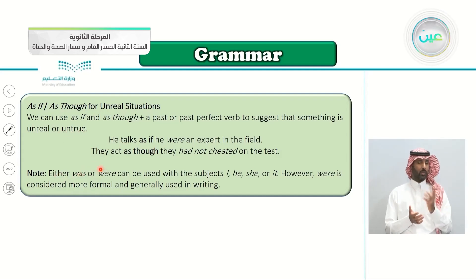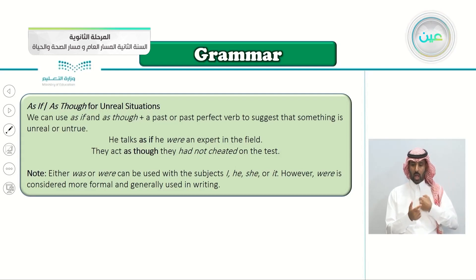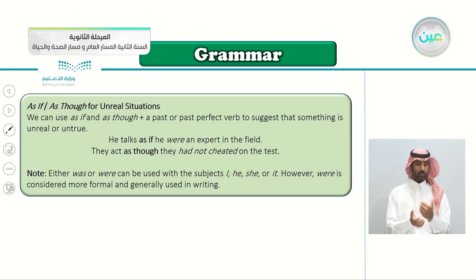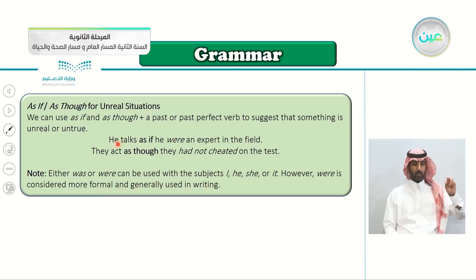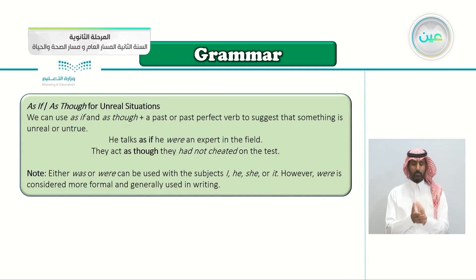A note: either 'was' or 'were' can be used with subjects I, he, she, or it. However, 'were' is considered more formal and generally used in writing — for example, 'he talks as if he were,' not 'was.' Both are correct, but 'were' is more formal and preferred especially in writing.